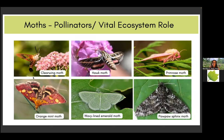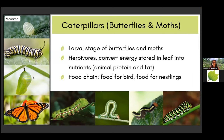Some moth species do not work as pollinators — as adults they do not eat — but they have really important ecological function through their caterpillars. Both butterflies and moths have caterpillars, which is the larval stage. They are herbivores — the first step in our ecosystem that converts the energy stored in the leaf into nutrients, animal protein and fat. They are essential food sources for birds, vertebrates, amphibians, and reptiles.